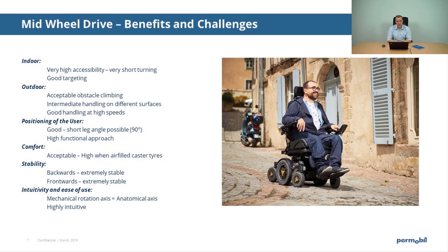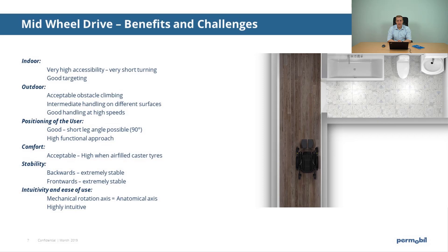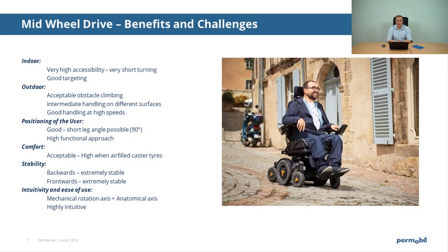Comfort, especially driving outdoors, is the challenging part for this base. There are six wheels which are points of contact transmitting shocks and vibrations to the rest of the power wheelchair and the user. The suspension system and the possibility to have air-filled tires have shown to be critical to increase comfort characteristics. At the stability level, this platform performs really well in both the backwards and frontwards direction. At the intuitivity level, this wheelchair is perceived as the best option, as the mechanical rotation axis is located in exactly the same position as the anatomical rotation axis.